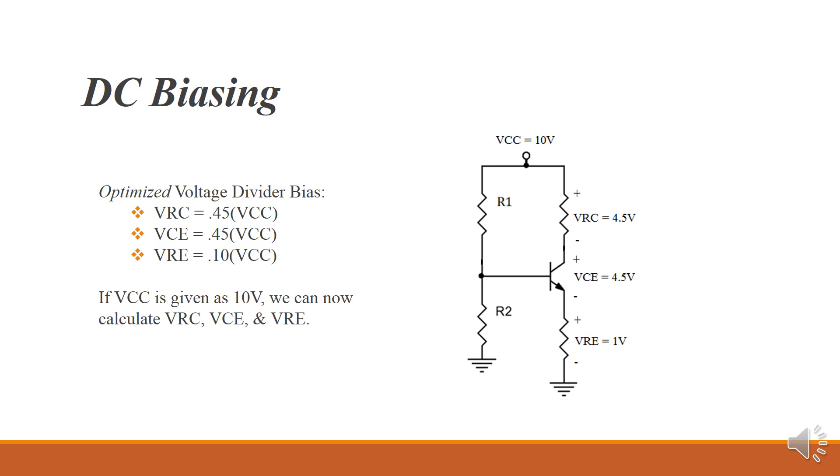Let's add a voltage here. Let's pick a VCC of 10 volts. If we give VCC as 10 volts, that makes VRC 4.5 volts, VCE 4.5 volts, and VRE 1 volt.